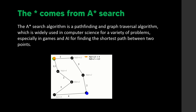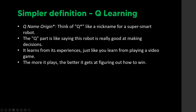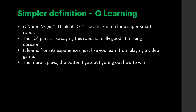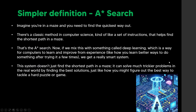To put it in simpler terms, think of Q-Star like a nickname for a super smart robot. The Q part means the robot is really good at making decisions and learns from its experiences — just like playing a video game repeatedly: the more you play, the better you get at figuring out how to win.